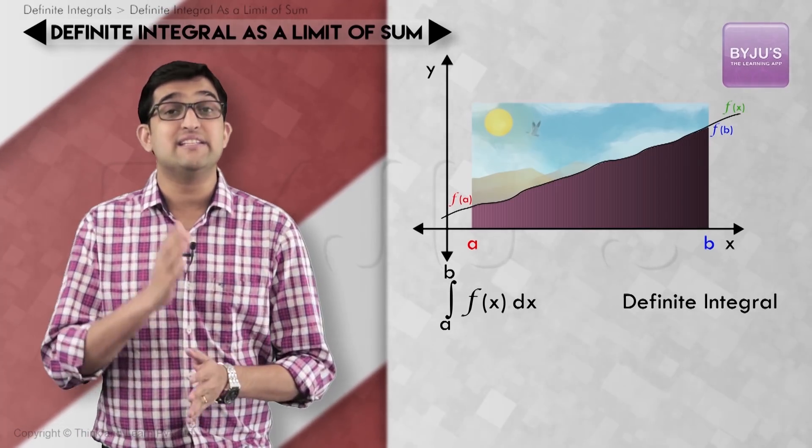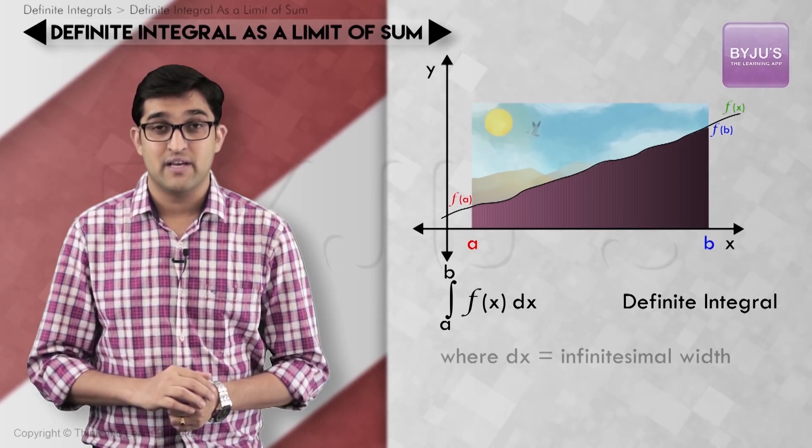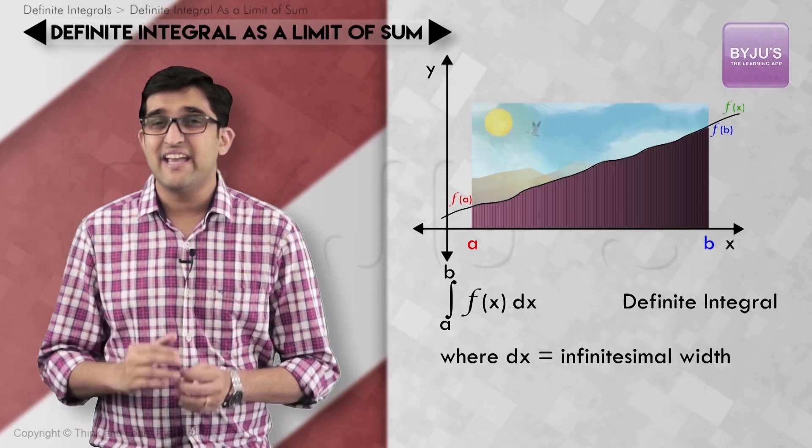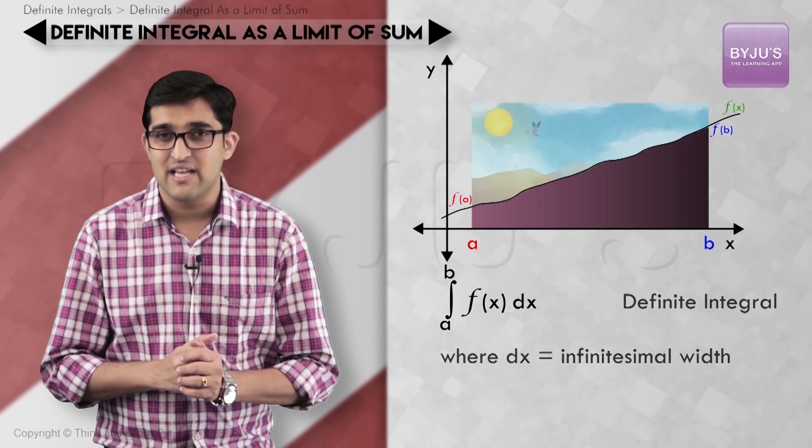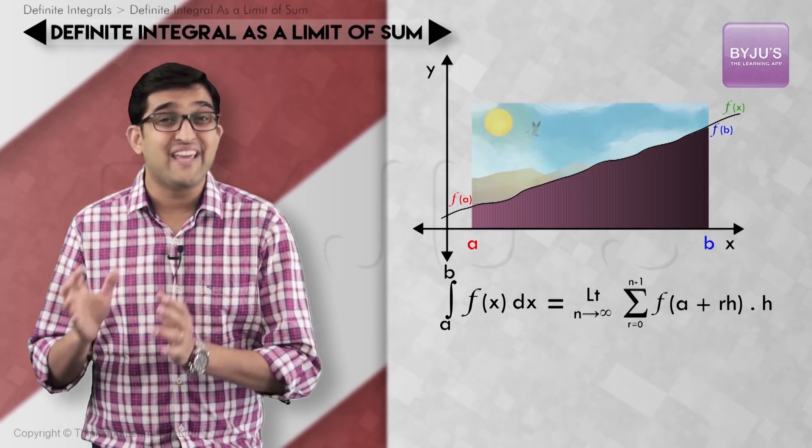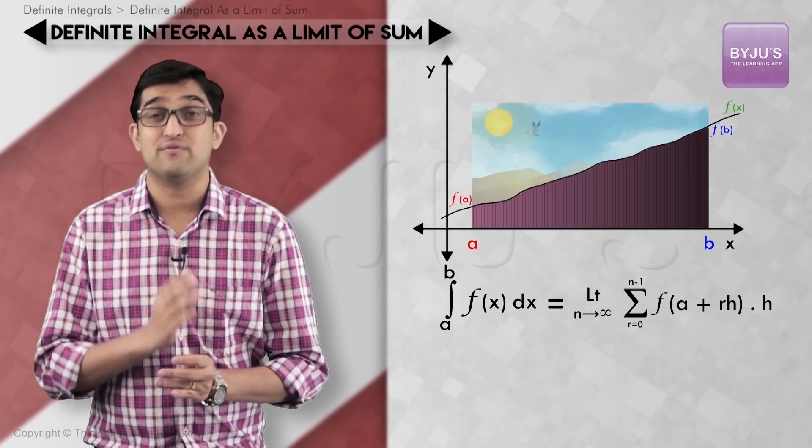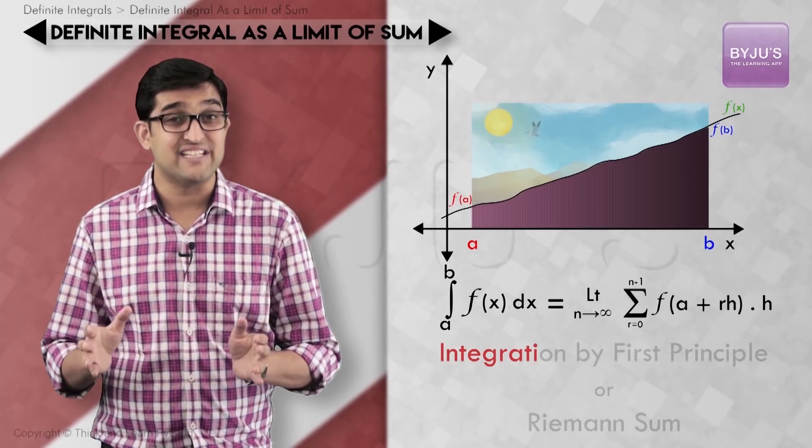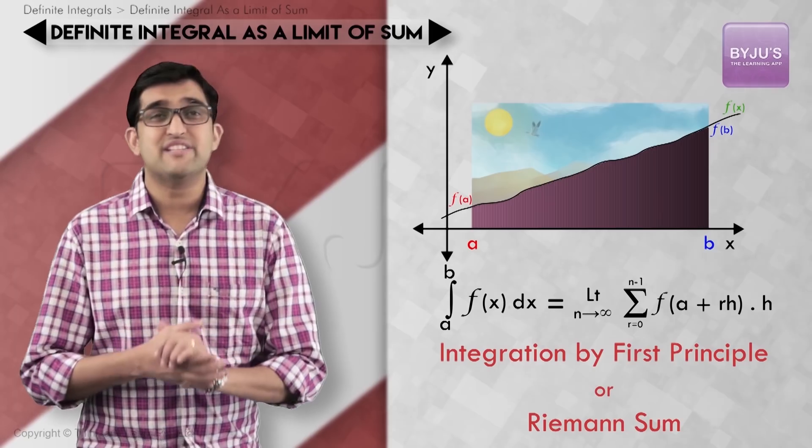Here dx represents the infinitesimal width of the rectangles we just constructed. This method of calculation of area under the curve, or integral a to b f(x) dx, by using limit of sum is known as integration by first principle or Riemann sum.